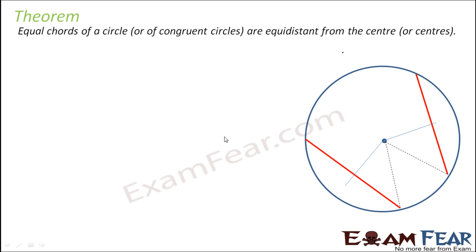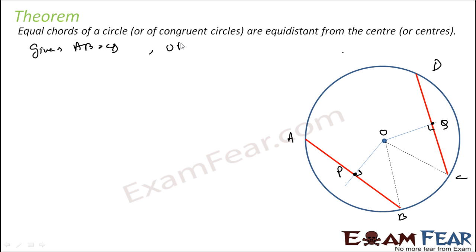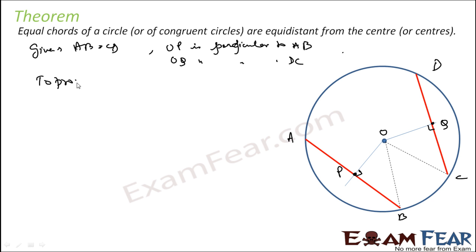We have two chords AB and CD. Let this be point P and point Q. Given: AB is equal to CD, and OP is perpendicular to AB, OQ is perpendicular to DC. We have to prove that OP is equal to OQ.